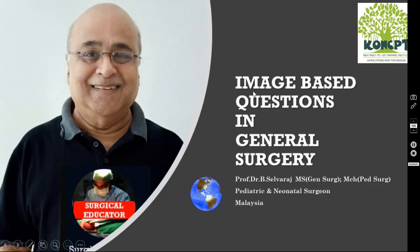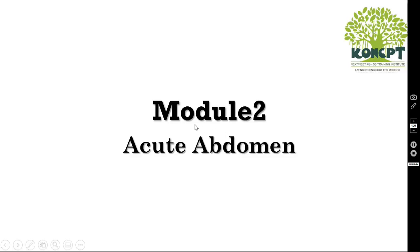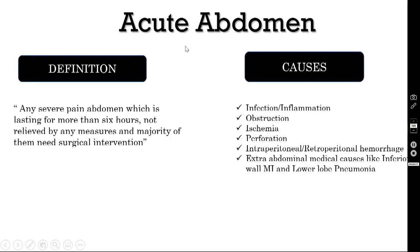Dear students, in the image-based questions, we are going to see module number two, that is acute abdomen. Before going to the case scenarios, I want to define what is the meaning of acute abdomen. Any severe abdominal pain which is lasting for more than six hours, not relieved by any medicines, and the majority of them need surgical intervention, is called acute abdomen.